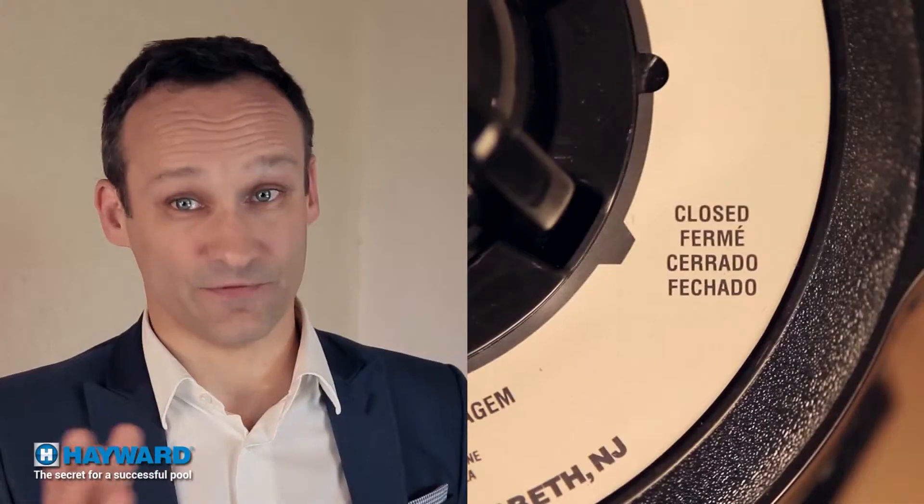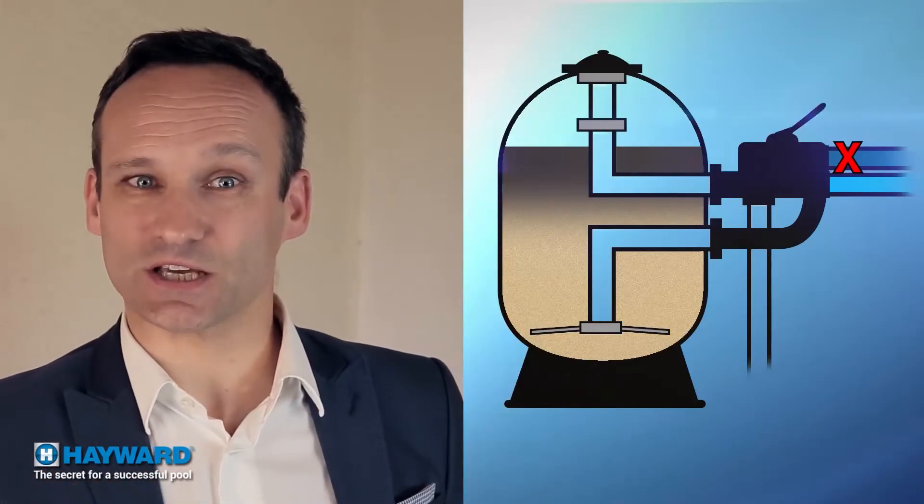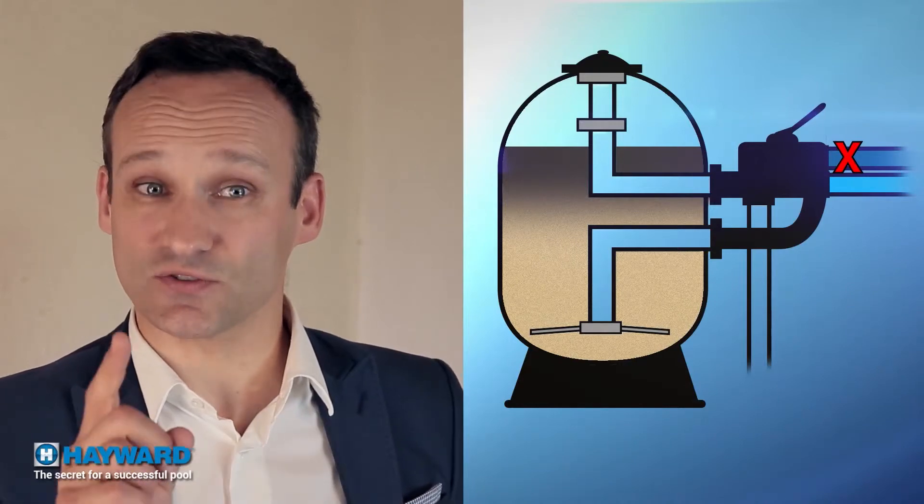Close position. Used to shut off the circuit for maintenance. Be careful, never run the pump with the valve in the closed position.